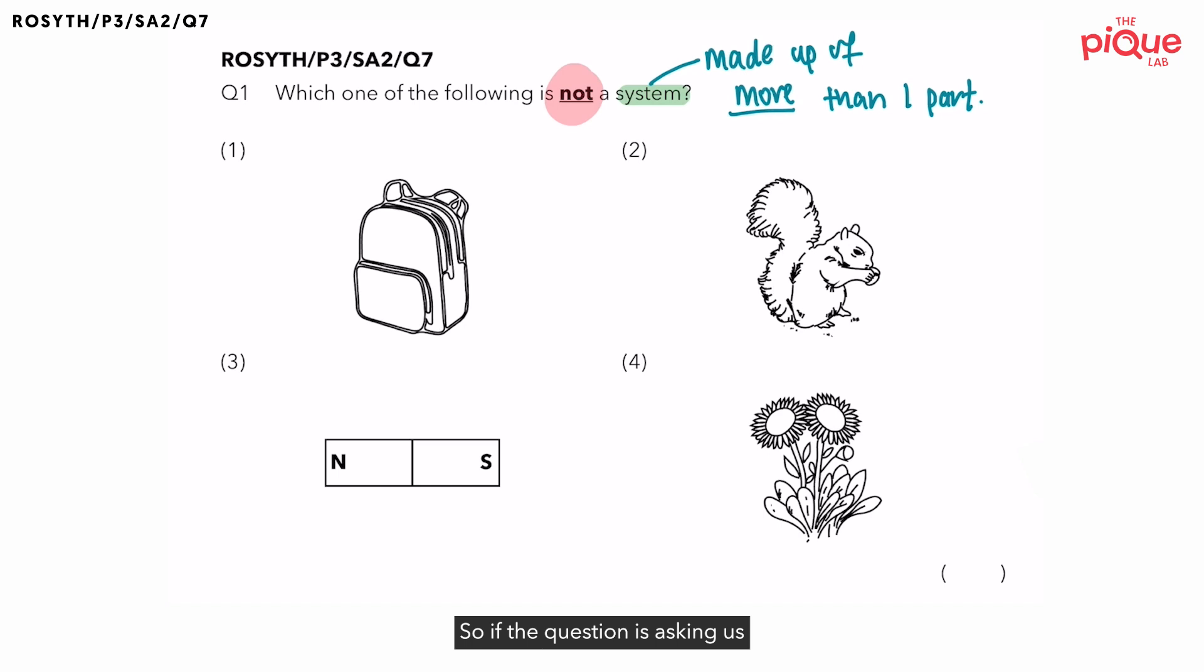So if the question is asking us which of the following is not a system, we are looking for the object that is considered as a non-system. Since system is made up of more than one part, now can you tell me how many parts will the non-system be made up of? Non-system will be made up of only one part. So now it is our job to go down the options to choose which is the object that is only made up of one part. So since they are asking us which is not a system, we will look for the options with a cross.